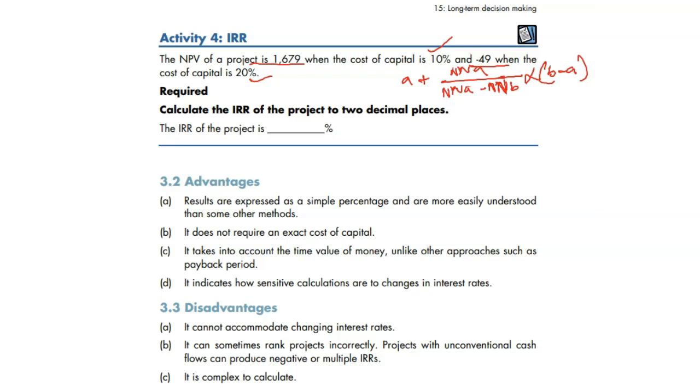These formulas will not be given in the exam. A means positive percentage, which is 10% plus NPV positive value, which is 16.79 over positive value 16.79 minus and another minus is going to be 4.49 and multiply by B minus A. B is 20% minus A is 10%.